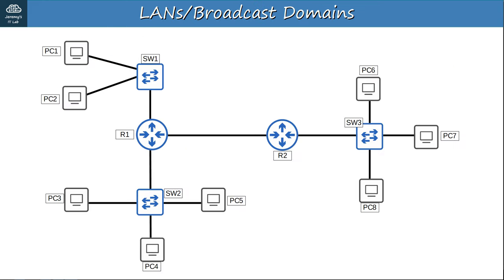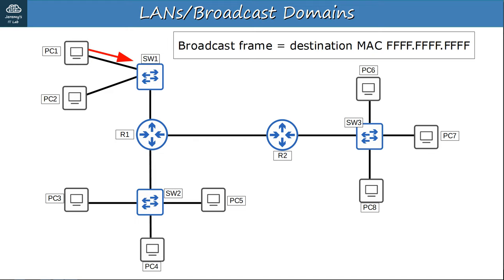Take a look at this network. How many broadcast domains do you think there are? A broadcast domain includes all devices that will receive a broadcast frame. Let's say PC1 sends a broadcast frame — a frame with a destination MAC address of all Fs. Which devices will receive it? PC1 sends the frame to SW1, and the switch floods it out all interfaces except the one it was received on, so the frame is sent to PC2 and R1. A router doesn't forward a broadcast frame — it will receive the frame but won't send it to other networks. So that means this is one broadcast domain, including PC1, PC2, SW1, and one of R1's interfaces.